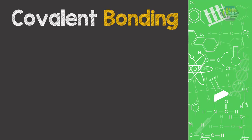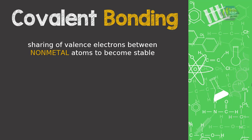The second type of bonding is covalent bonding. Covalent bonding occurs between non-metal and non-metal atoms. It involves a sharing of valence electrons between non-metal atoms for them to become stable.